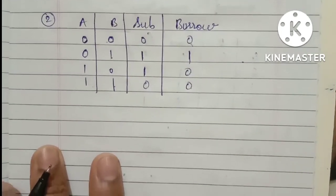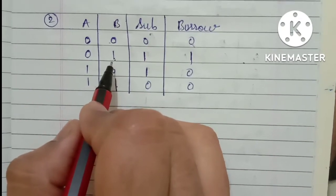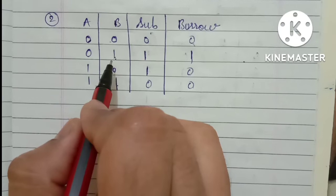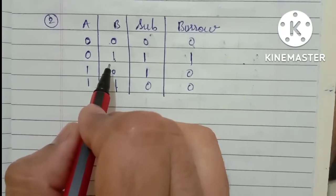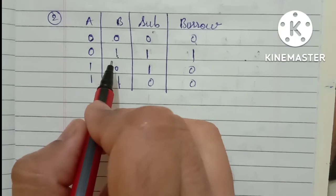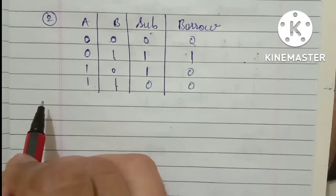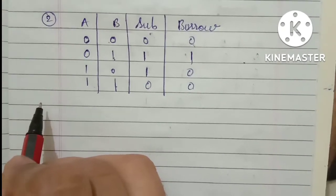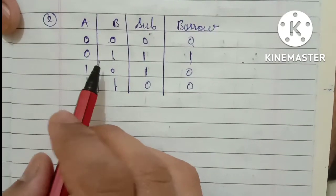Understood? So zero minus one is one. Difference is one. Magnitude is one. But the main thing is we are subtracting B from A. That's why we have to borrow. We have to take a borrow for A because zero is less than one. That's why we have to take borrow and then we have to subtract.